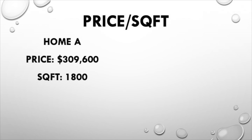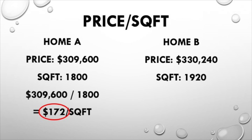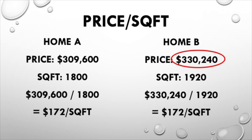To illustrate this, let's compare two homes in the same area that are different sizes and have different prices. Home A is 1,800 square feet and has a price of $309,600. Home B is 1,920 square feet and has a price of $330,240. Assuming all things being equal, we can't really compare these two homes against one another based on price because one home is bigger than the other. So let's look at price per square foot. Home A has a price per square foot of $172, and home B also has a price per square foot of $172. So even though home B has a higher price, they actually have the same value per foot.